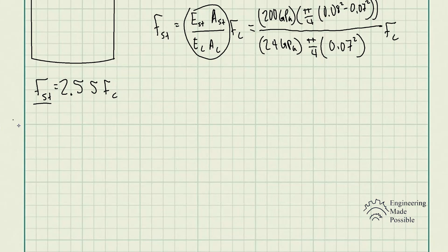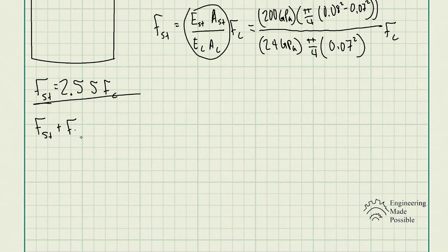Now that we have that relationship, we need another equation. Since each material supports a portion of the total load, the force in the steel plus the force in the concrete must equal the external load of 80 kilonewtons. This gives us a second relationship to use.